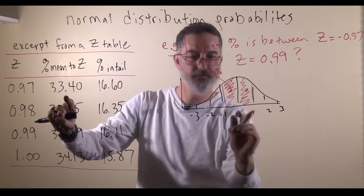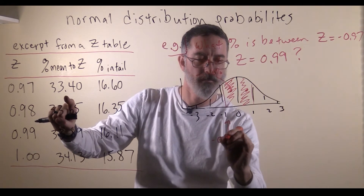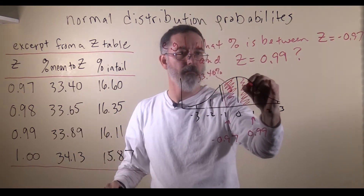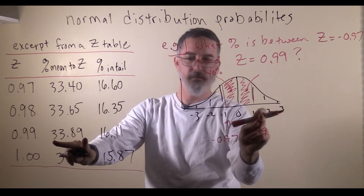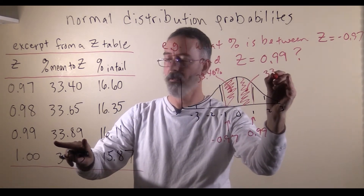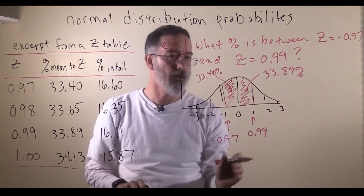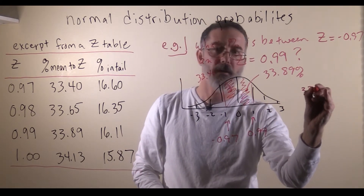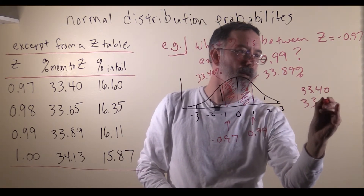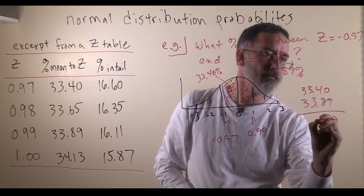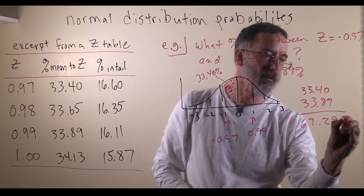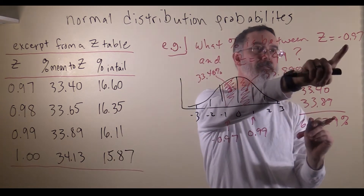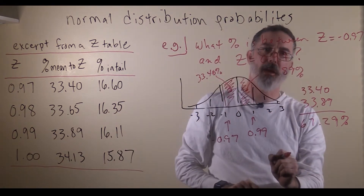And over here for z equals 0.99, the percent between the mean and that z-score is 33.89%. The question asks for the total area, so we add them together: 33.40 plus 33.89 gives us 67.29%. So 67.29% of this distribution is between the z-score of negative 0.97 and the z-score of 0.99.